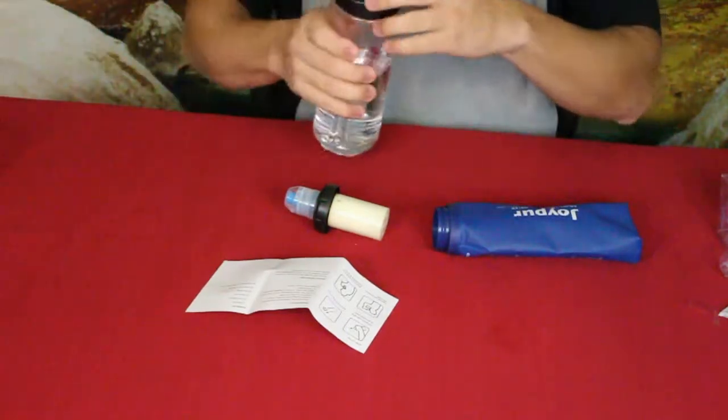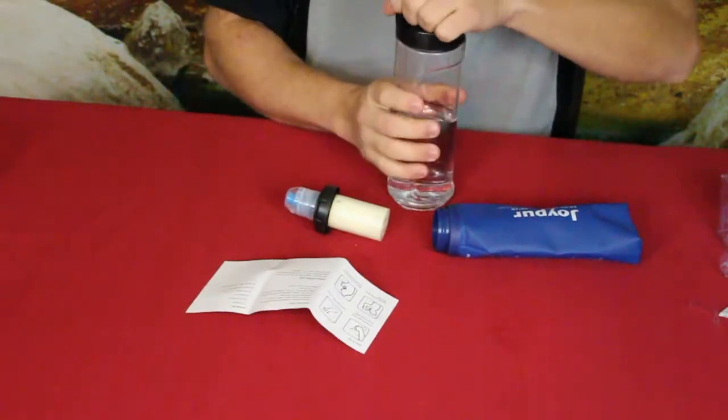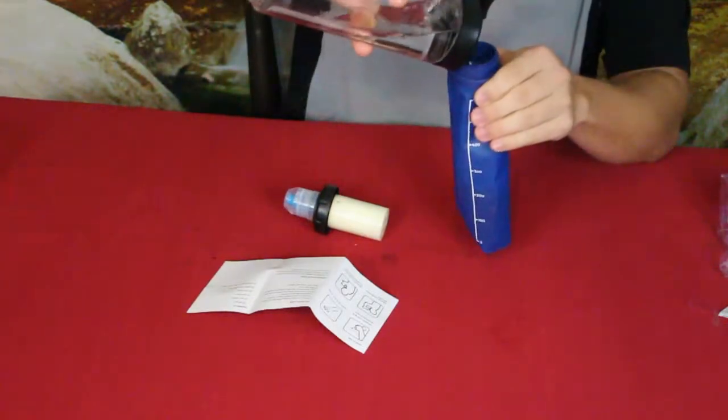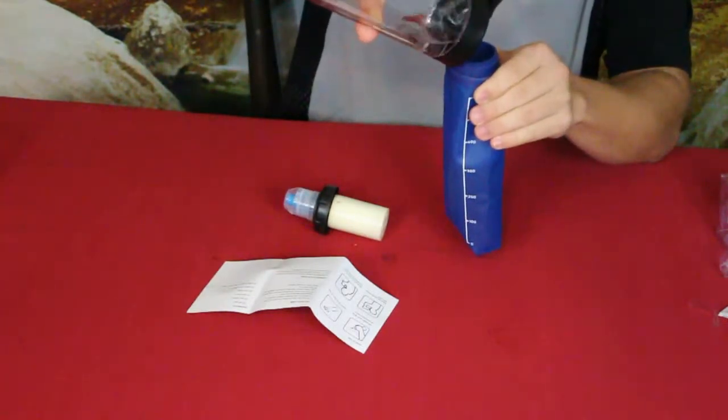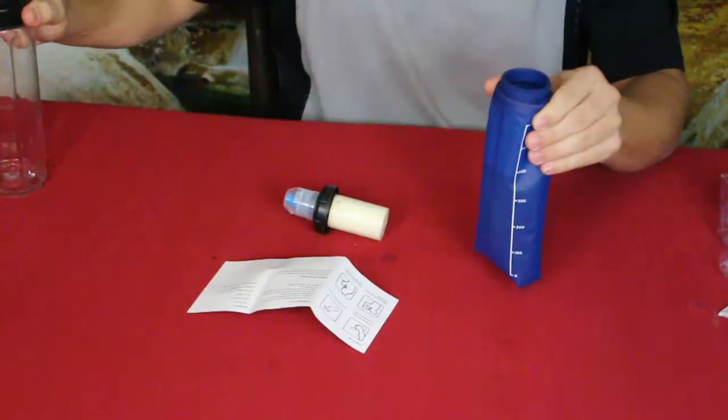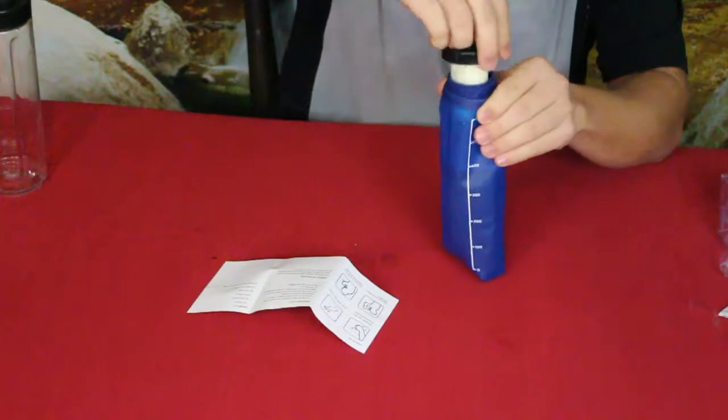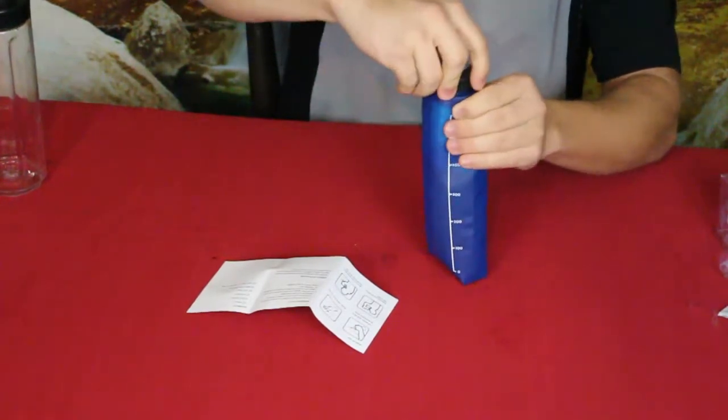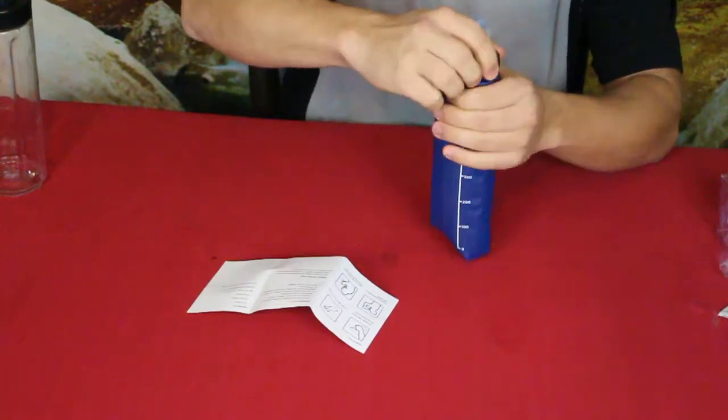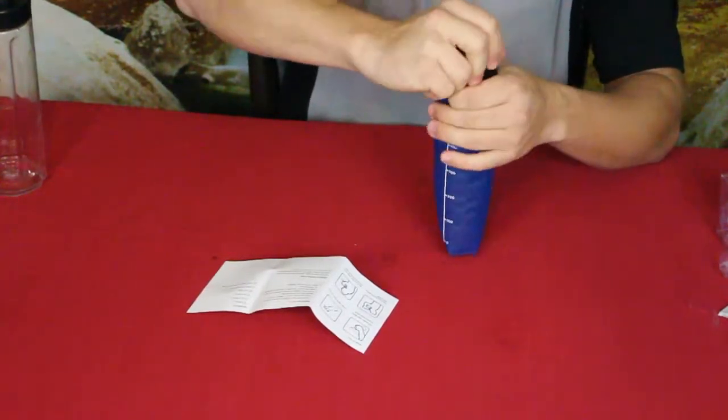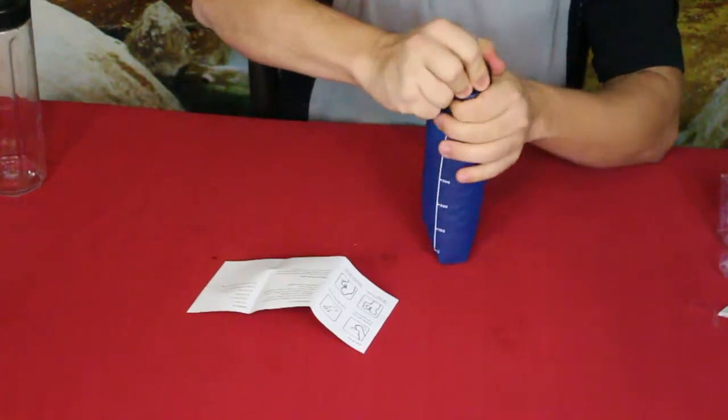Now I went ahead and grabbed some water. This isn't dirty water, but we're just going to see what this looks like when it pours out. This is supposed to be a fast flow system, not like some of those systems like the LifeStraw or various filtration straws. Those tend to be rather slow.